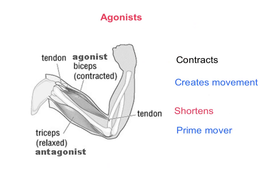First we'll look at the agonist muscle. This is the muscle that contracts — it shortens. Here we've got the bicep muscle, which is contracting and shortening. It's creating the movement, and another word for it is prime mover. So the agonist muscle contracts to produce the movement and shortens to allow this to happen.